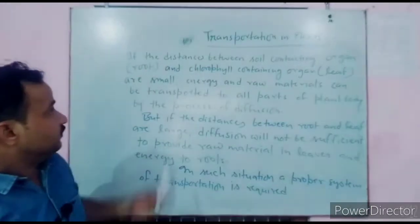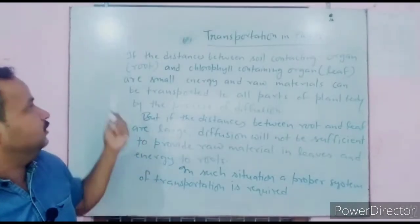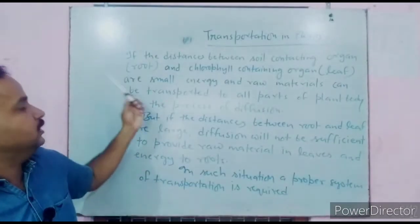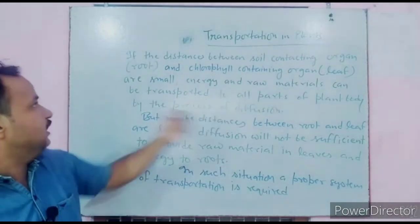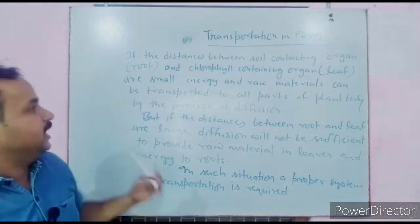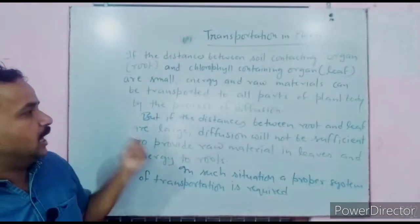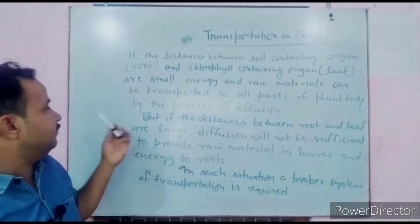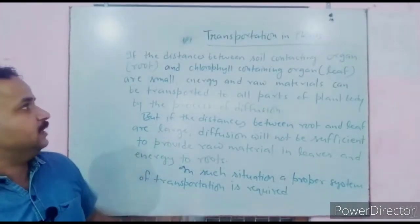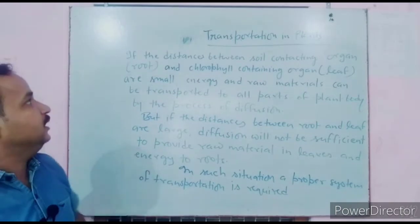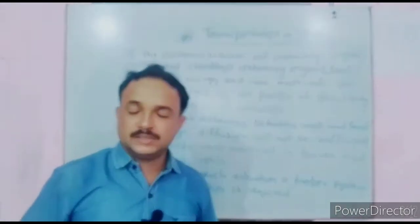If the distance between the soil-contacting organ, which is the root, and the chlorophyll-containing organ, which is the leaf, is small, energy and raw material can be transported to all parts of the plant body by the process of diffusion.